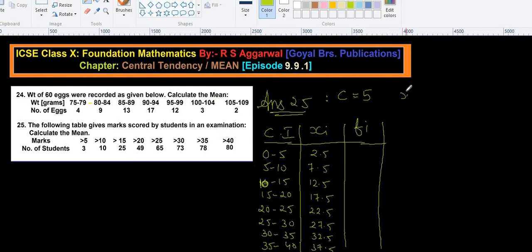Step deviation method is what. X bar is equal to A plus C multiply by sigma fi Ui upon sigma fi. So this is the step deviation method where you require to have class length, that is C, and Ui. So here you have Ui. So Ui is equal to what, xi minus A upon C, and afterwards you require to have fi Ui.